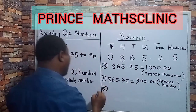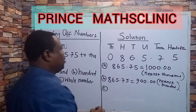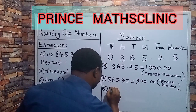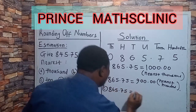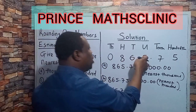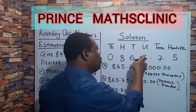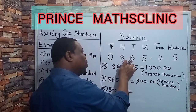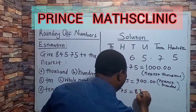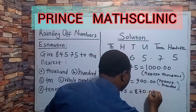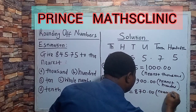Next, nearest ten. Writing the number again: 865.75. This is the tens place. The number after tens — is it up to 5 or above? Yes. So you change it to 1 and add it to 6, making it 7. So this becomes 870.00. This is the nearest ten.